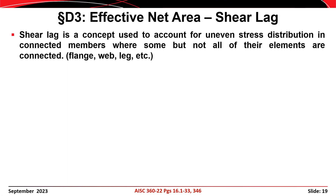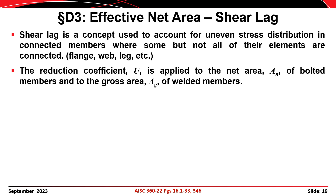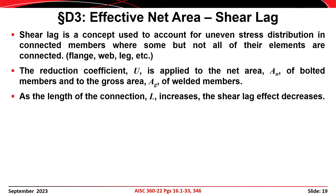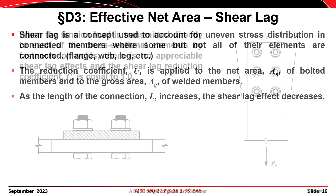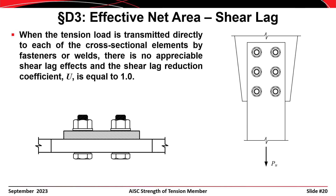The next topic is shear lag. We have the net area An and the effective net area Ae, and the difference between the two is the shear lag reduction coefficient U. Shear lag accounts for non-uniform distributions of stress in members where some elements of the section are connected but others are not — for example, the flange of a W-shape, the leg of an angle, the web of a channel, or the stem of a T. The shear lag coefficient is applied to the net area for bolted connections and to the gross area for welded connections. Shear lag effects are less severe in longer connections.